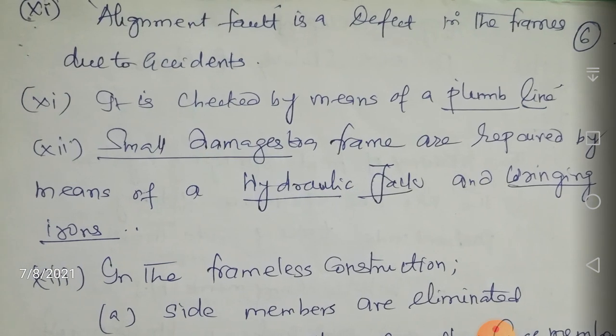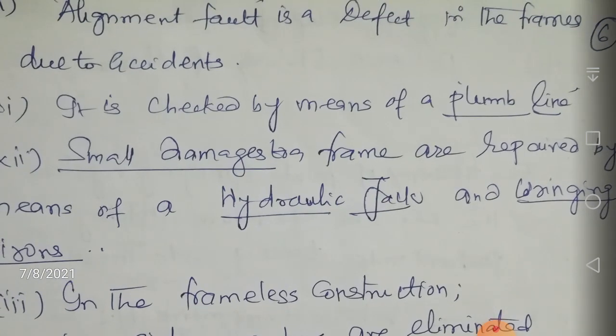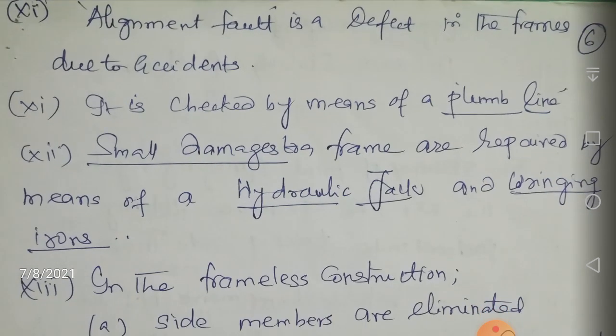Alignment fault is a defect in automobile frames caused by accidents. Whenever an accident occurs, the alignment of the frame gets impaired — this is called alignment fault. Alignment fault is checked by means of a plumb line, which is a device used to detect this particular defect.